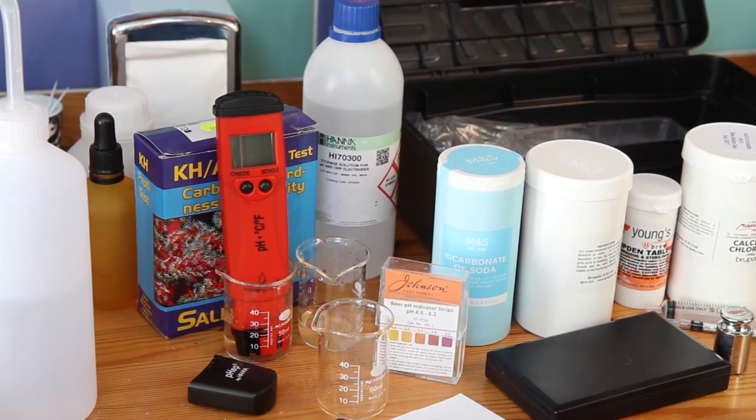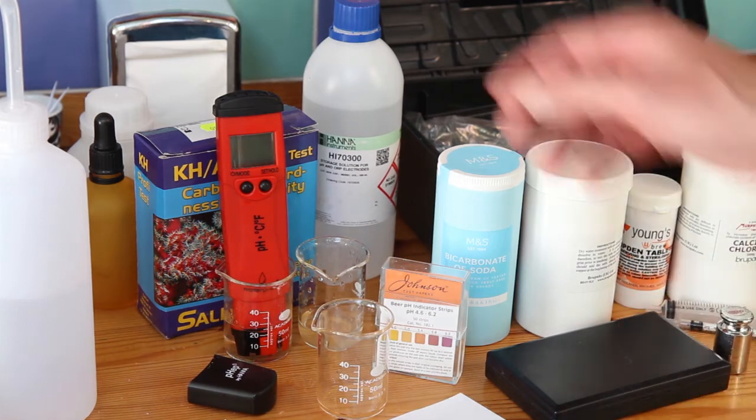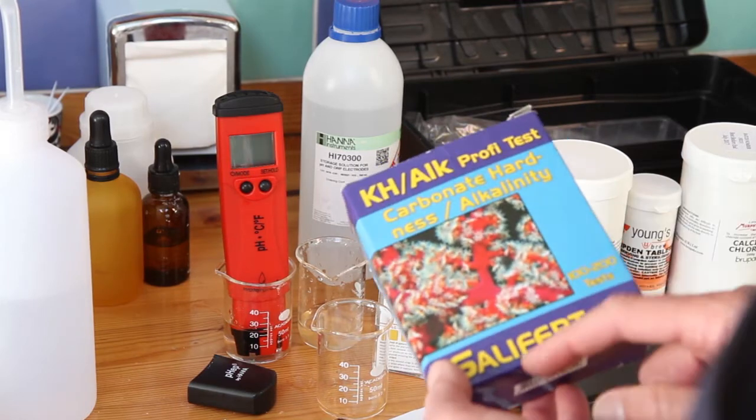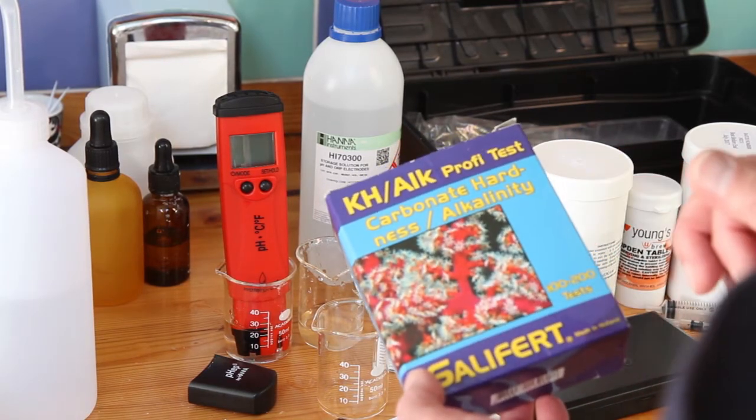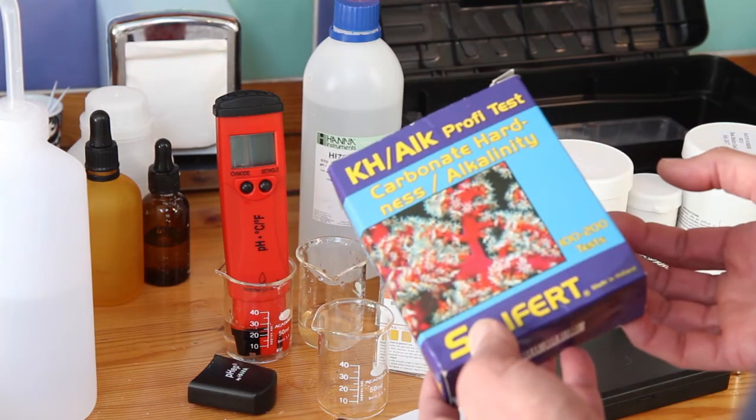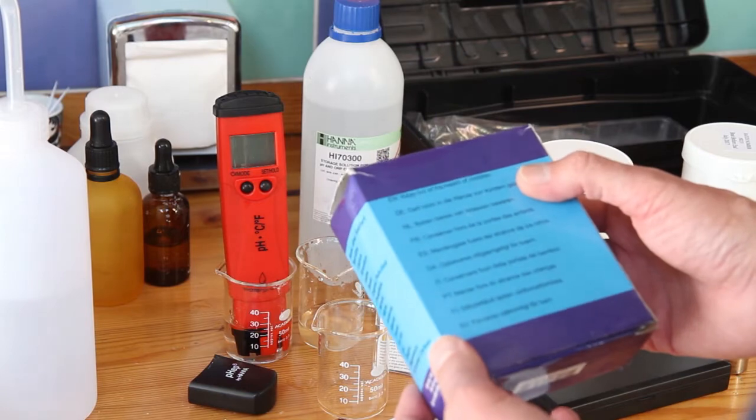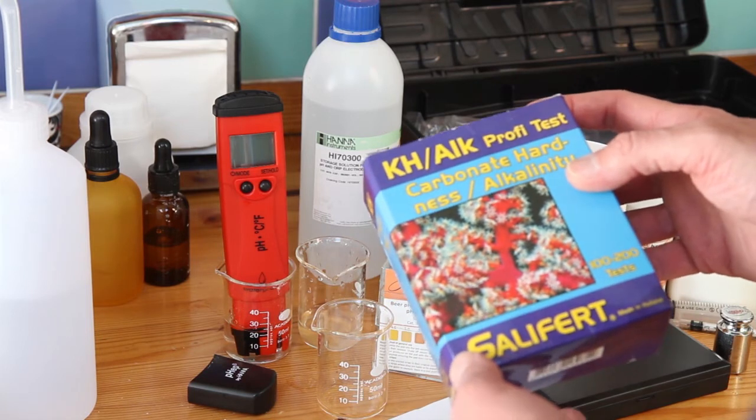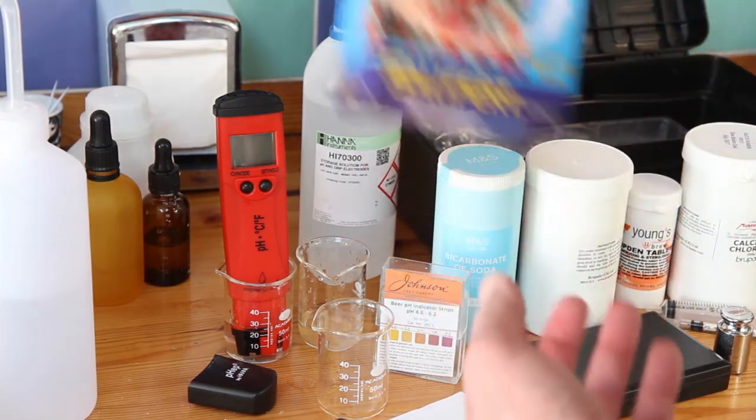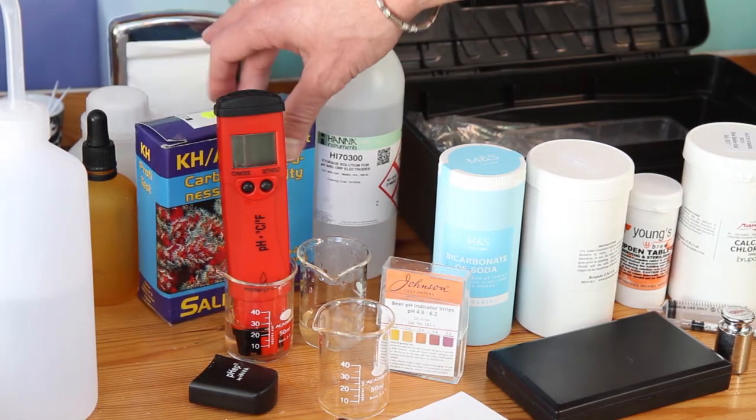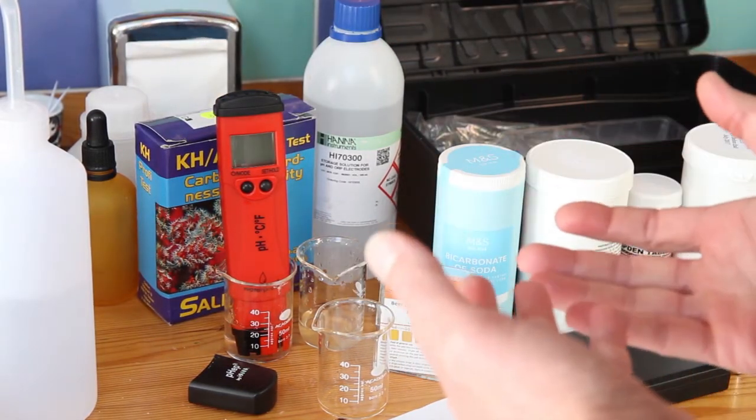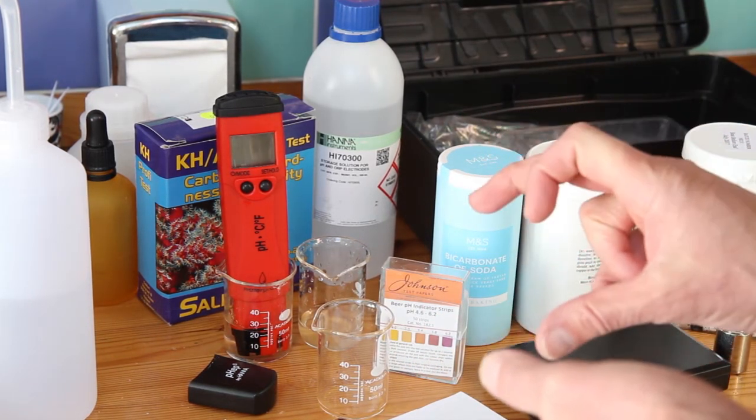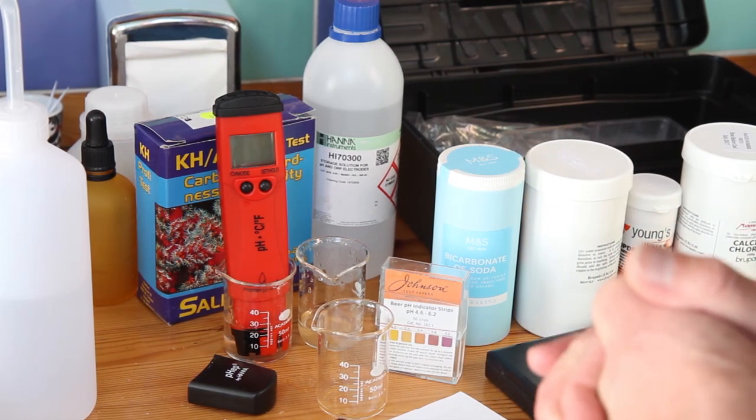If you can't get total alkalinity, there is a test that you can get. And again it is from our soul brothers and sisters the fish keepers. Saliferts carbonate hardness and alkalinity tests, a profi test. These are on Amazon plus other places. I think this does something like 50 tests. It is a simple titration test and I might do a short video showing how to do it in a fourth of this series.